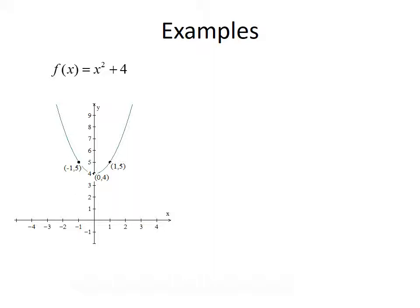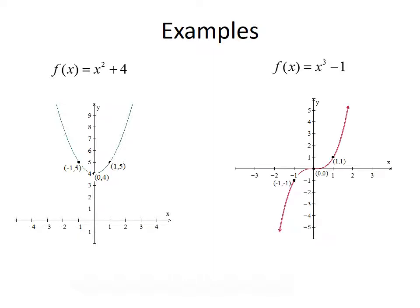Notice that for each of these points, the y-value has just had 4 added to it. For instance, in the original parabola x², we had the point (0, 0); the corresponding point is (0, 4). Now let's try f(x) = x³ - 1. We start with f(x) = x³. Since we're subtracting 1 from x³, we shift this graph down by 1 unit. The corresponding points shift: (0, 0) becomes (0, -1), (1, 1) becomes (1, 0), and (-1, -1) becomes (-1, -2).